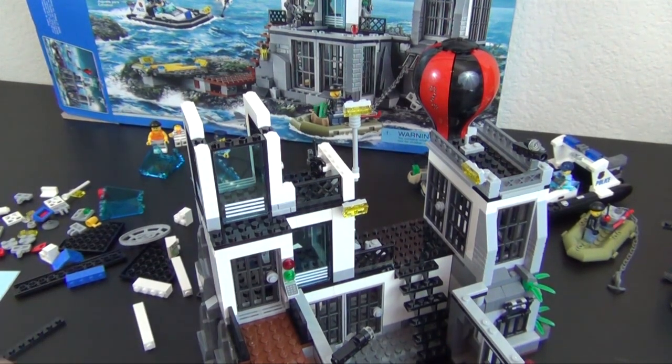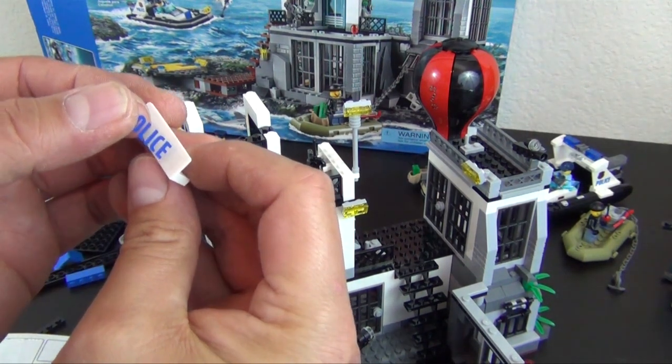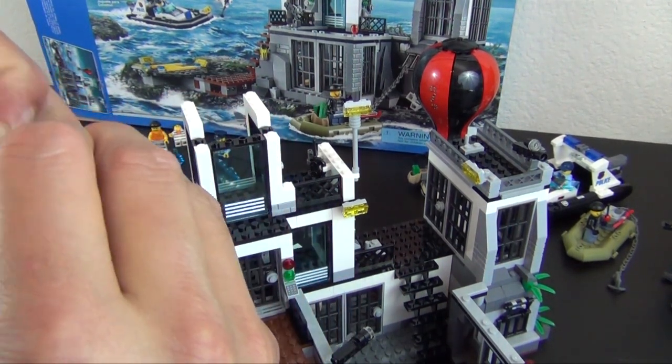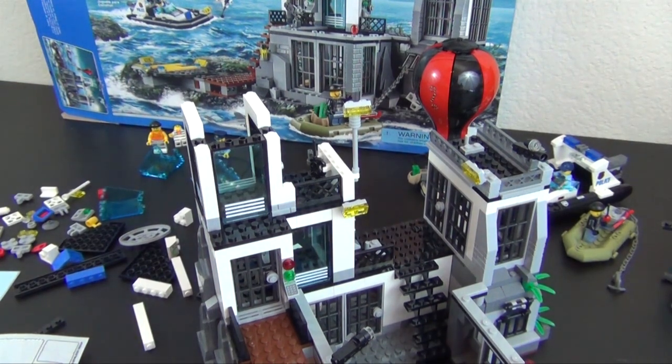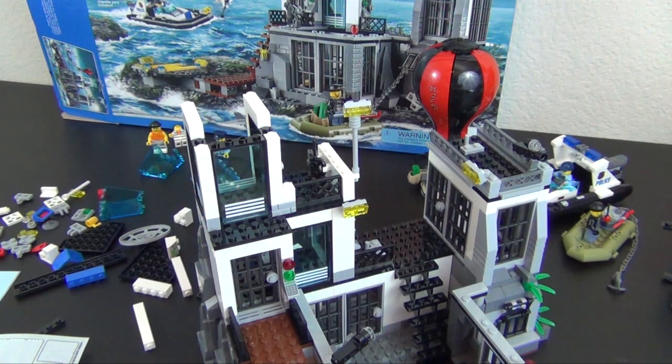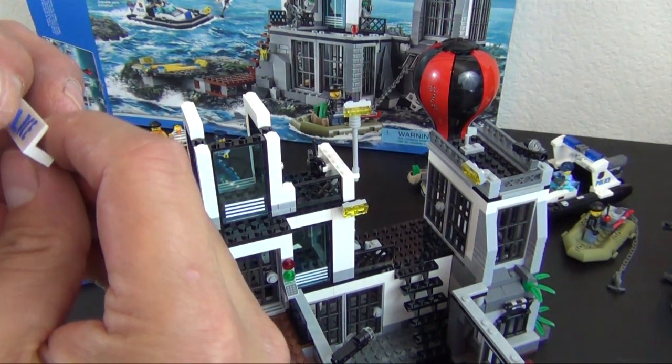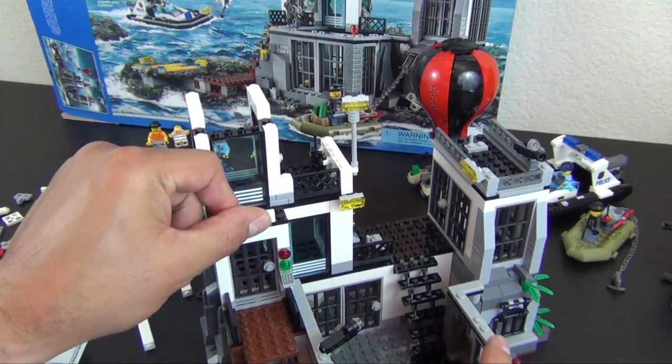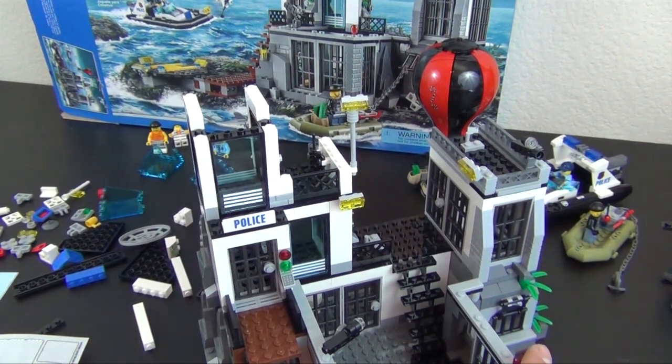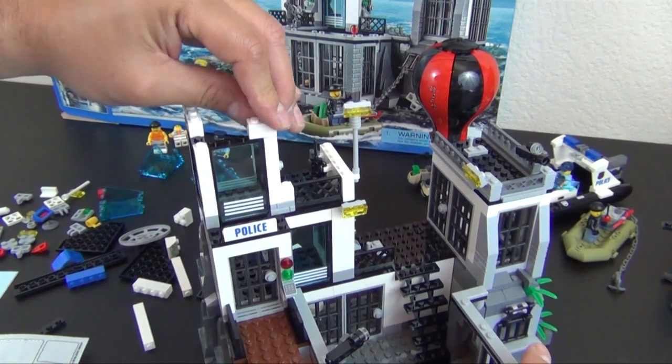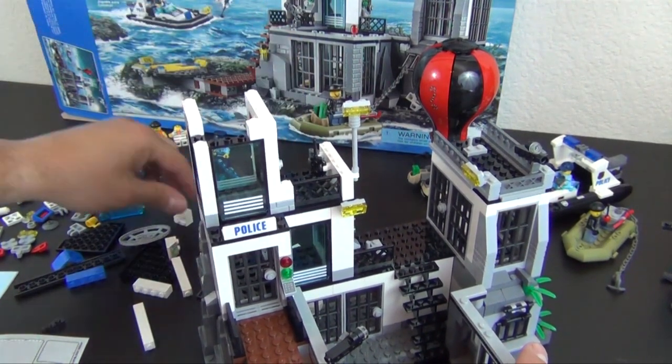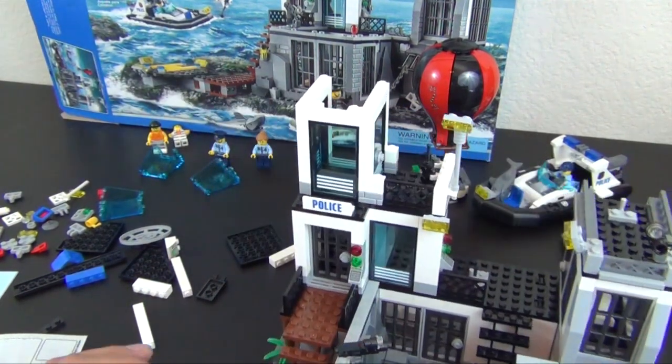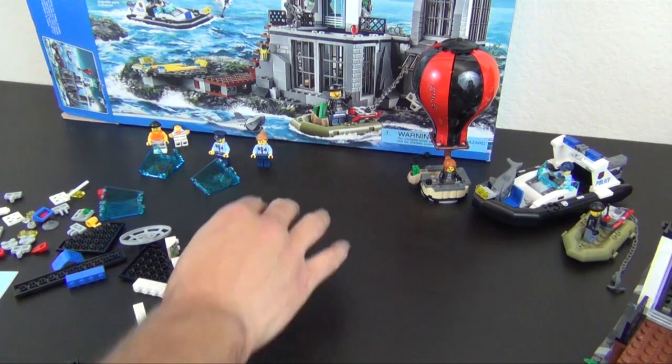And here's the last sticker, police sticker. These stickers for the panels are always tricky because they make them almost the same width as the panel. All right, so we're going to continue the watchtower. Now we're going to build the top portion of the watchtower.